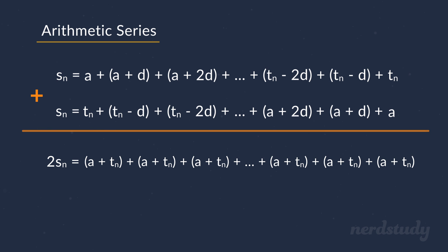Now, what would determine how many times we should perform this a plus t_n? Well, that would be determined by the n number of terms that we have. So, we can actually simplify this side of the equation to just n times a plus t_n. And now, we can divide both sides by 2 to isolate for s_n to get the following.